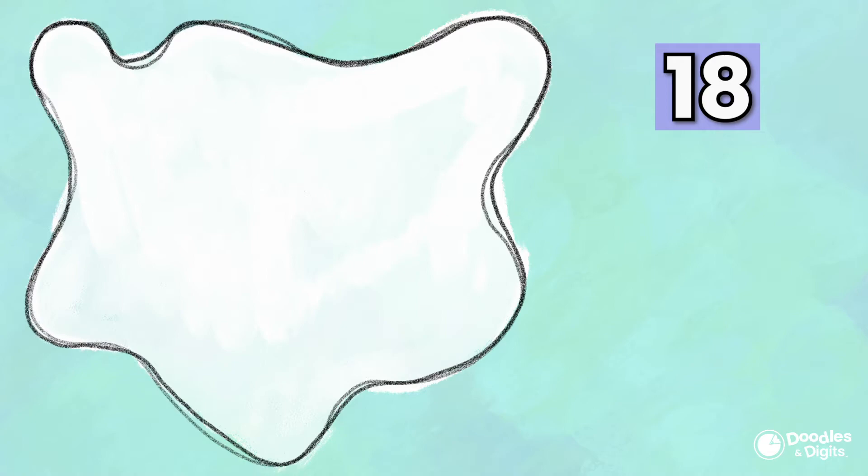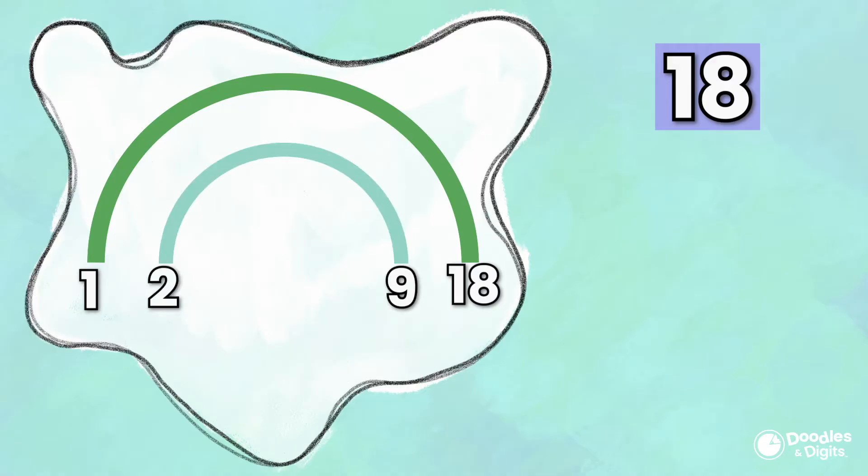I always start with the number 1. All numbers have 1 as a factor. What times 1 equals 18? 18! Now I go on to the next number, which is 2. 2 times what equals 18? 9! Alright, let's go on to the number 3 to see if it's a factor of 18. 3 times what equals 18? 6!